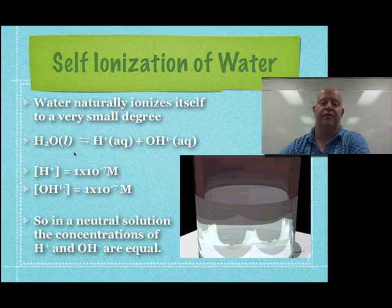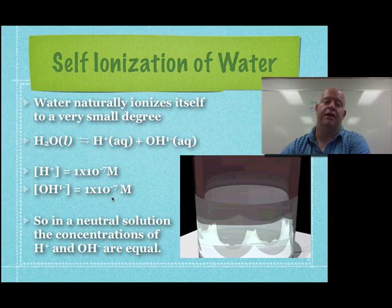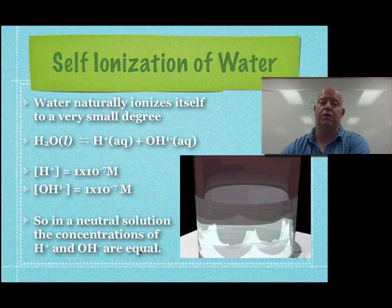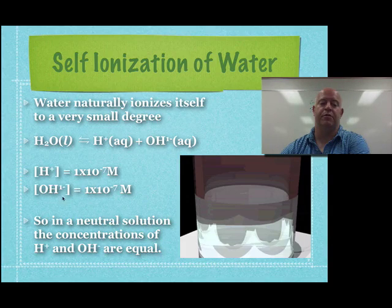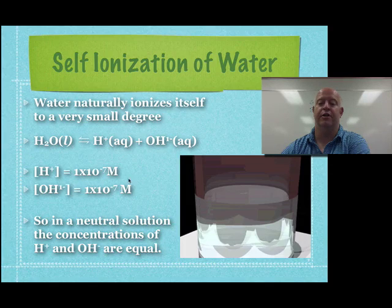So again, very small amounts, but if you have a neutral solution, what that's telling us then is that your hydrogen ions and your hydroxide ions are equal. So if you are neutral, meaning not acid, not a base, these things should be the same. So if you're neutral, they both should be 1 times 10 to the negative 7th molarity.